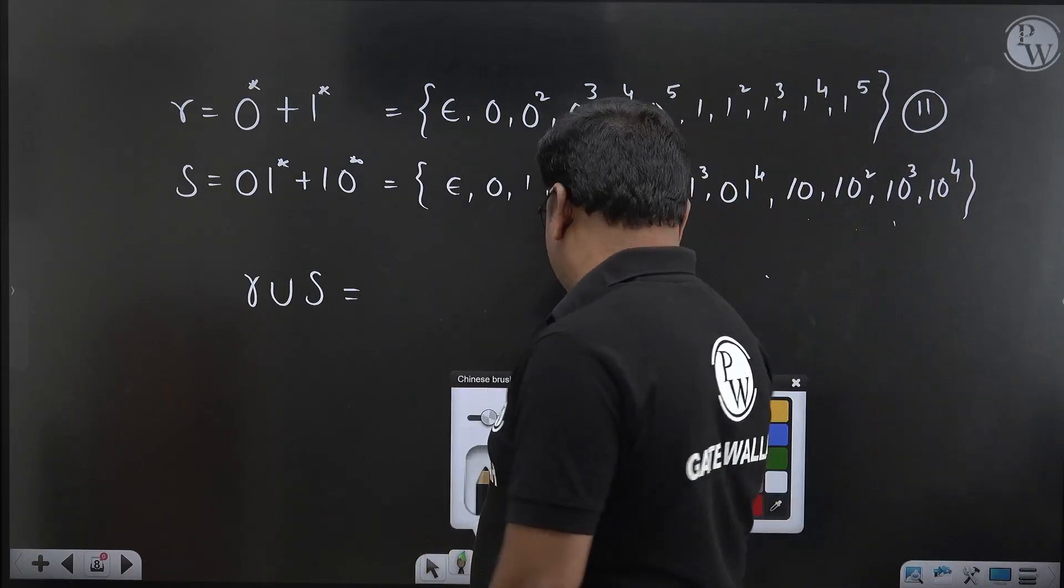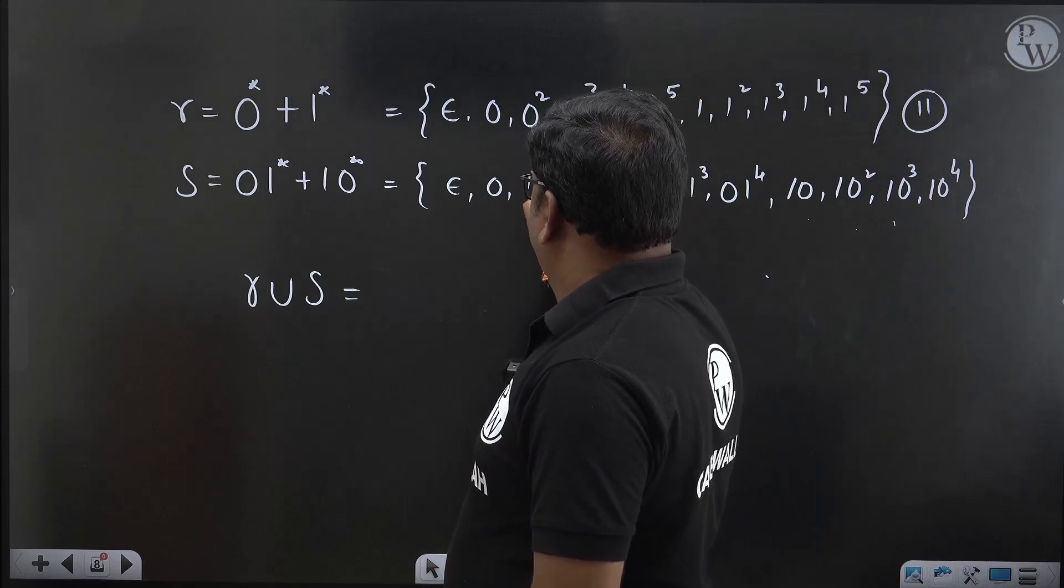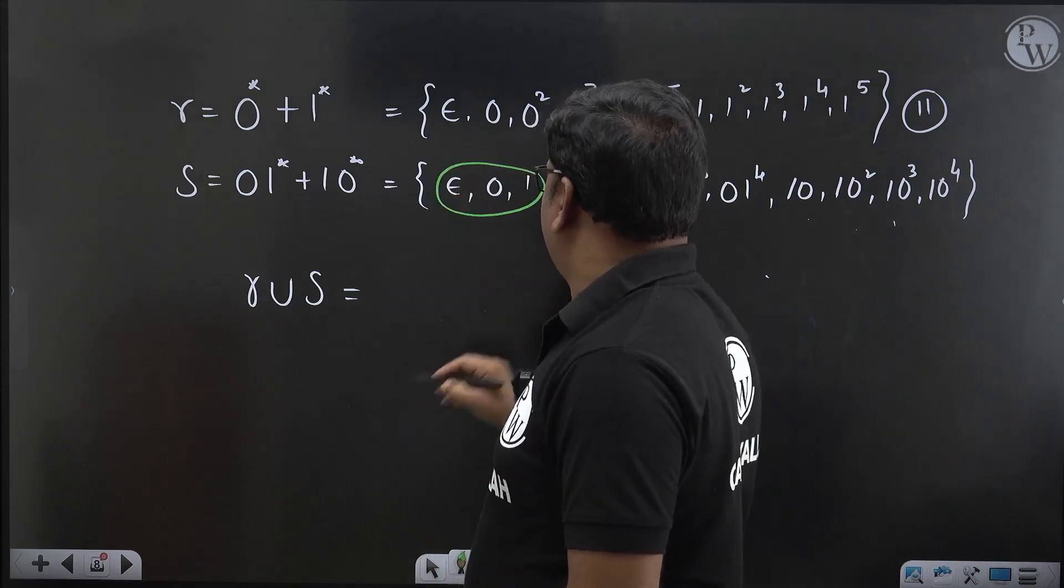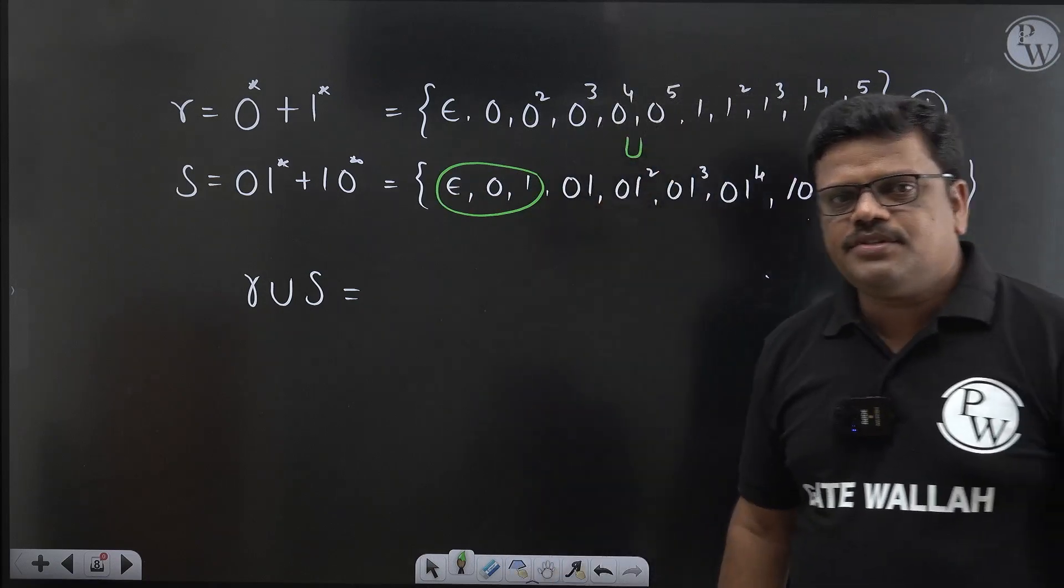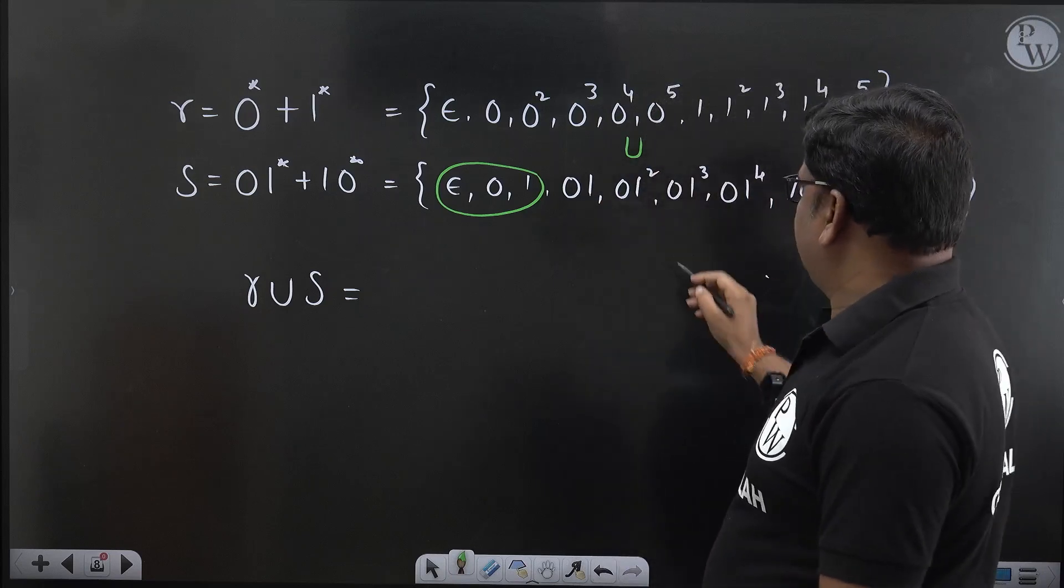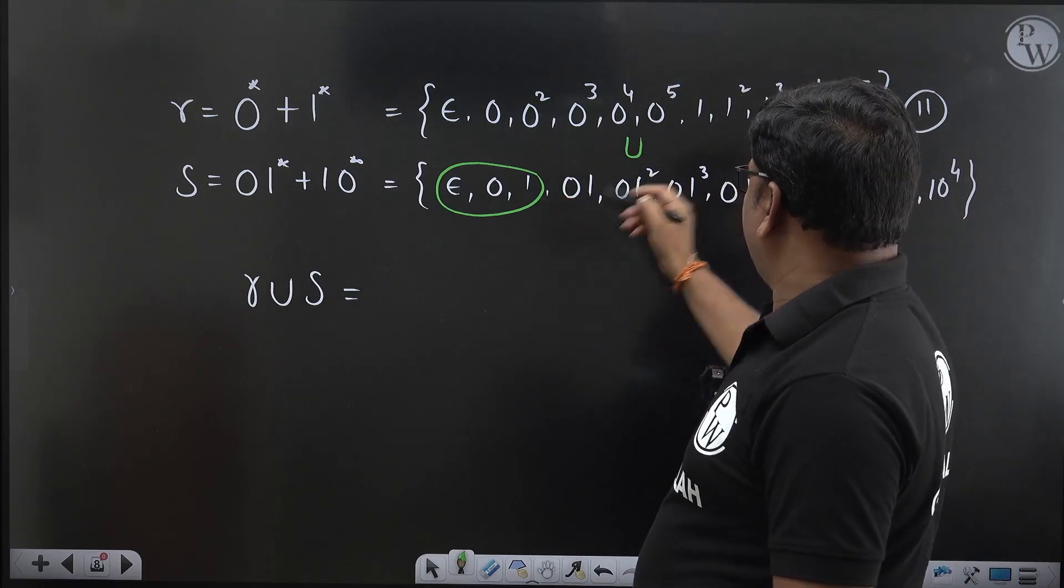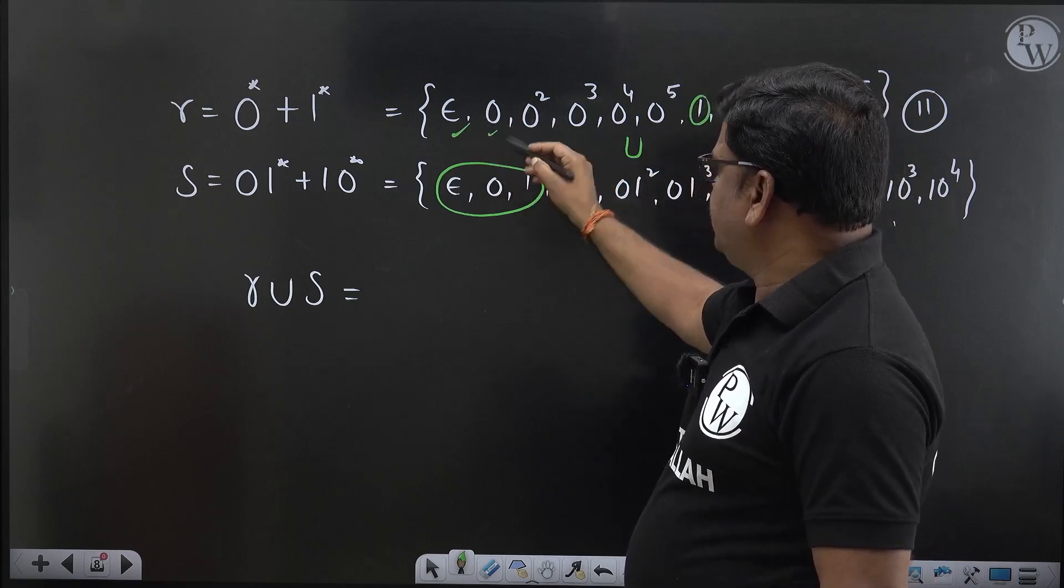If you observe the repeated strings: epsilon, 0, 1, because we have to perform union now. If you perform union how many strings are there in R union S here?